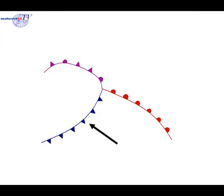The cold front is shown on a chart like this, as a blue line with solid blue triangles. On a black and white chart, it will be shown as a black line with solid black triangles.